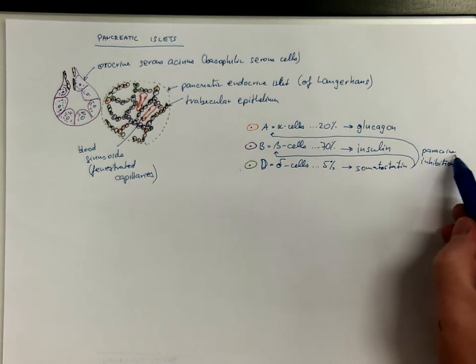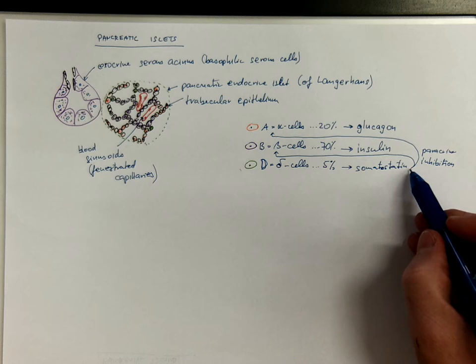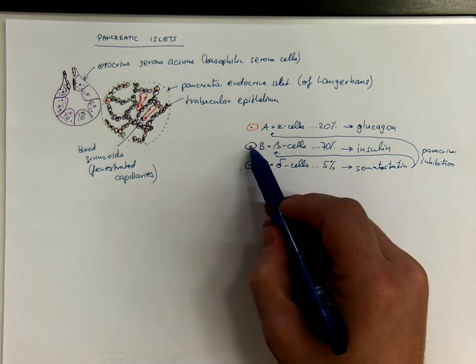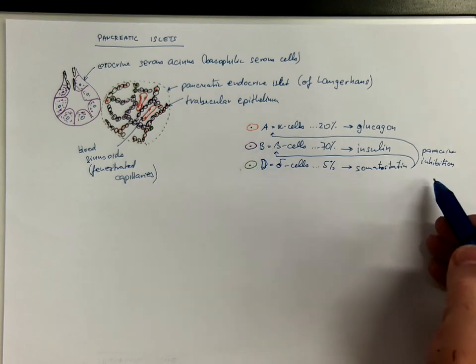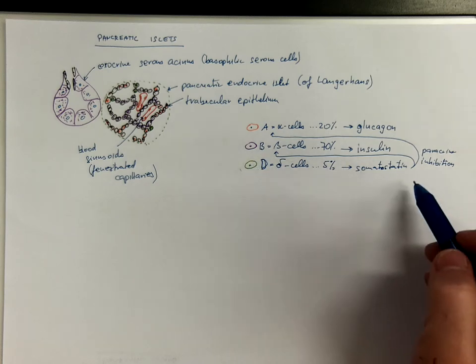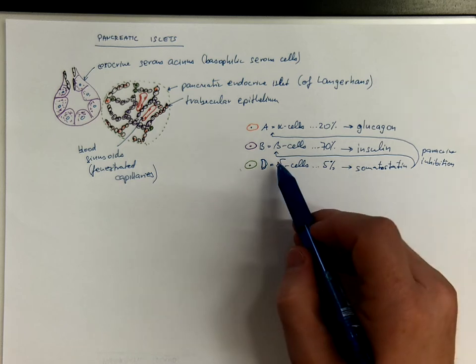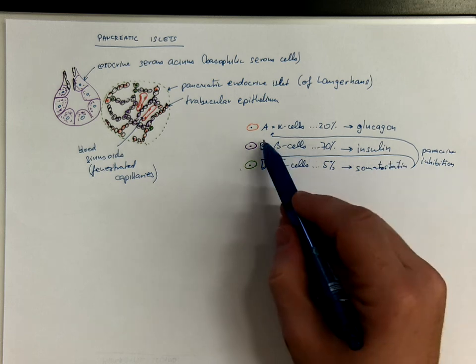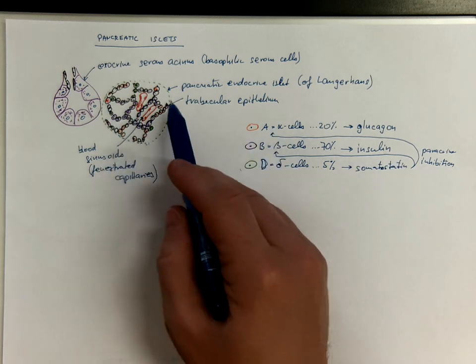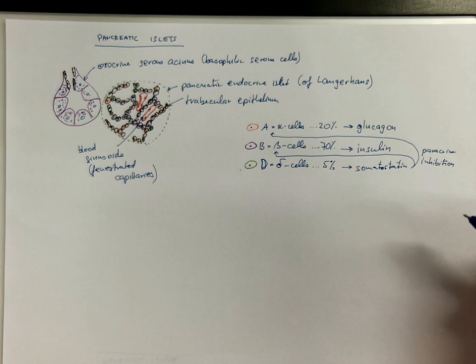The word paracrine in this context means that the target cells are very close to the source cell of the hormone. It doesn't have to circulate through the whole body to reach the cells. The tissue hormone is finding the target cells in the neighborhood, in the tissue context.